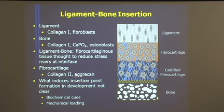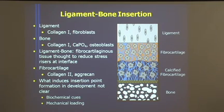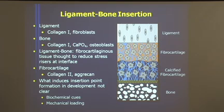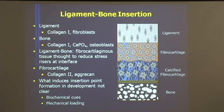The fibrocartilaginous region contains a slightly different cell type and some different extracellular matrix molecules than those found in the mid-substance of the ligament — things like the addition of collagen and aggrecan in the extracellular matrix. It's thought that this is developed to reduce stress risers at this interface, but we know very little about the relative contributions of the biochemistry of the tissues and mechanical loading in the development of this overall organization.